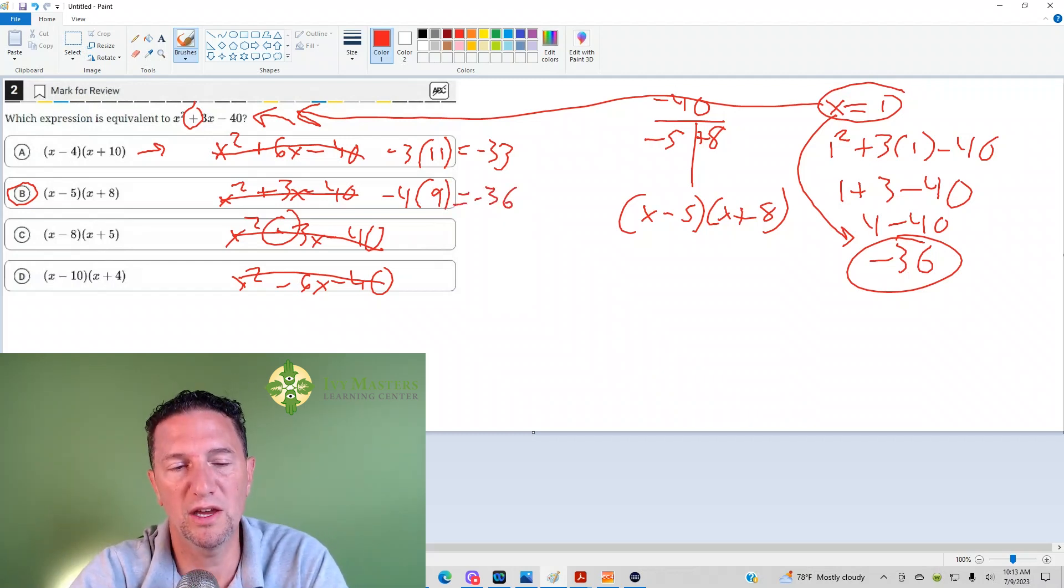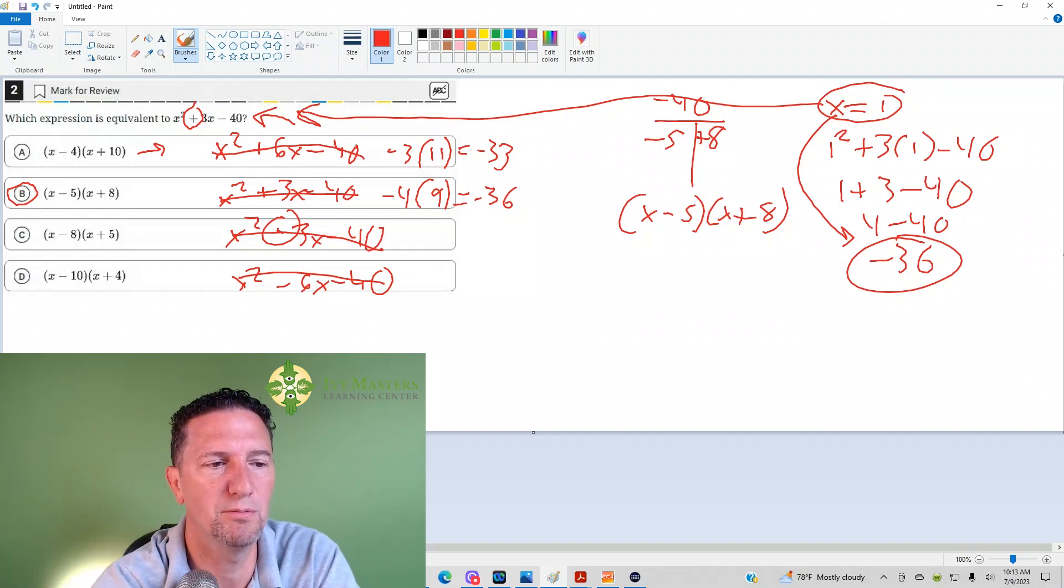Do check every answer choice if you use this method because if you have more than one answer that works, then you've got to adjust your x and then plug in again. Here I wind up with 1 minus 8, negative 7, 1 plus 5, 6. And I wind up with negative 42, which again is not negative 36 that I'm looking for.